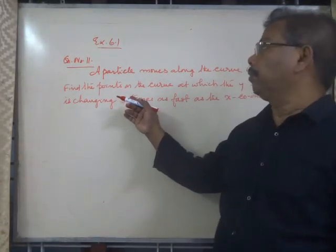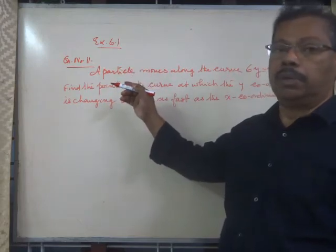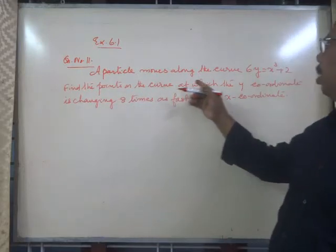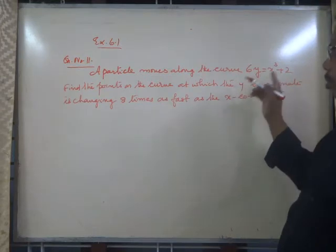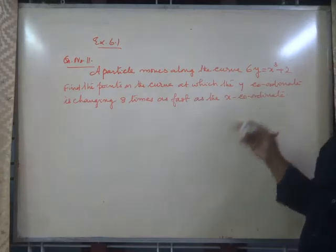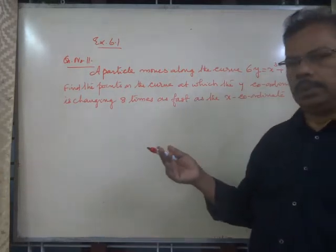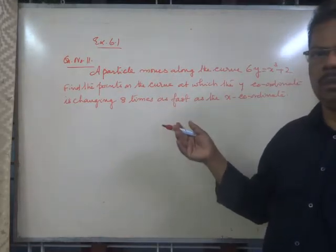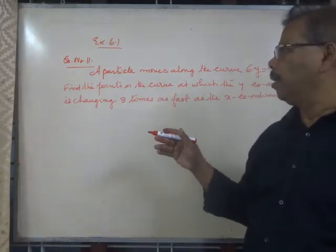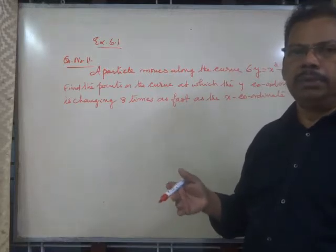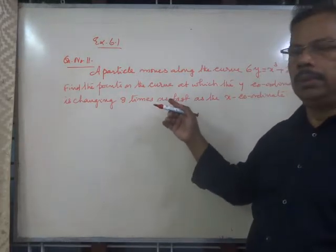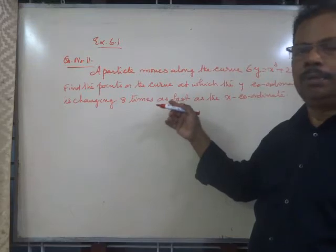Friends, we have another question from exercise 6.1 on application of derivatives — question number 11. A particle moves along the curve 6y = x³ + 2. Find the points on the curve at which the y-coordinate is changing 8 times as fast as the x-coordinate. This question is found to be asked in public examinations repeatedly, so give it special importance.